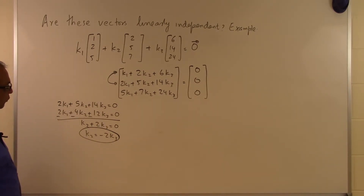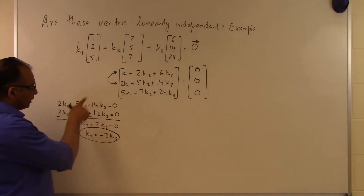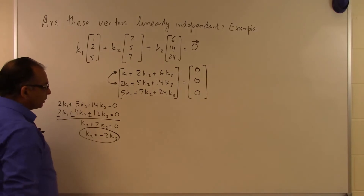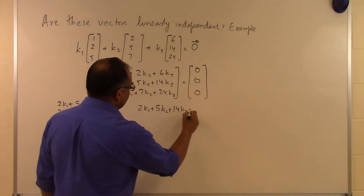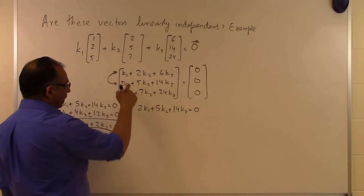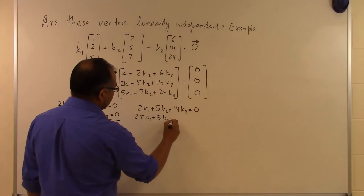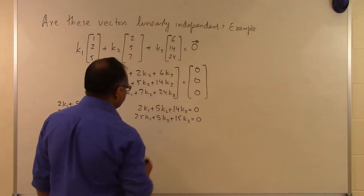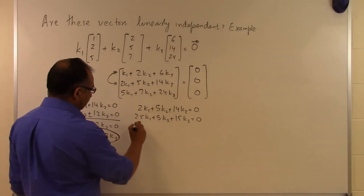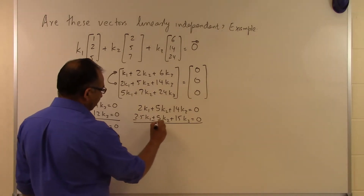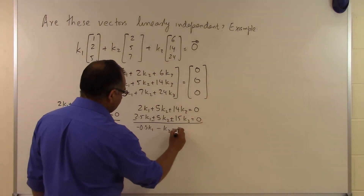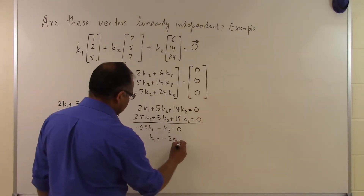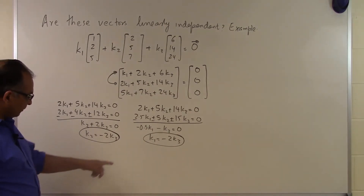Still using only the first two equations, now eliminating K2 to find the relationship between K1 and K3. Take the second equation, 2K1 + 5K2 + 14K3 = 0, and multiply the first equation by 2.5 to get 2.5K1 + 5K2 + 15K3 = 0. Subtracting gives -0.5K1 - K3 = 0, so K1 = -2K3. The two relationships are: K1 = -2K3 and K2 = -2K3.